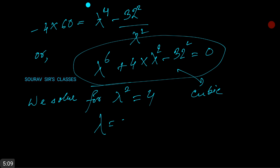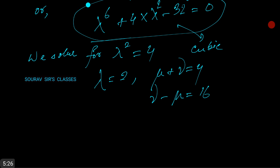By taking lambda equals to 2, we have mu plus nu is equal to 4, and nu minus mu is equal to 16. Again, a simultaneous equation which you will solve and get nu is equal to 10.